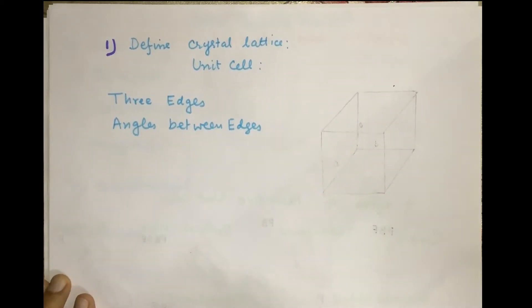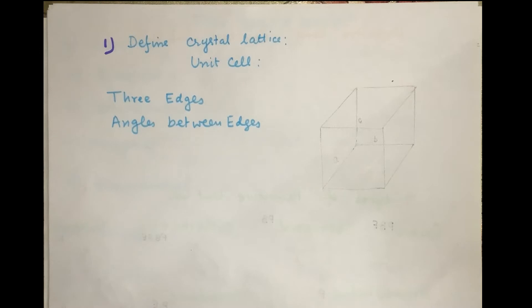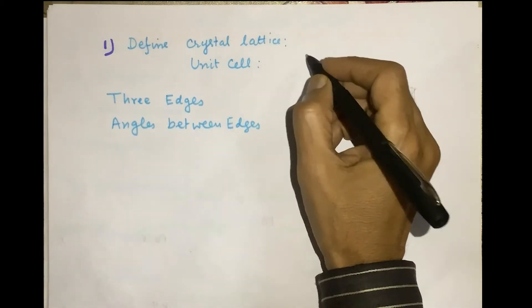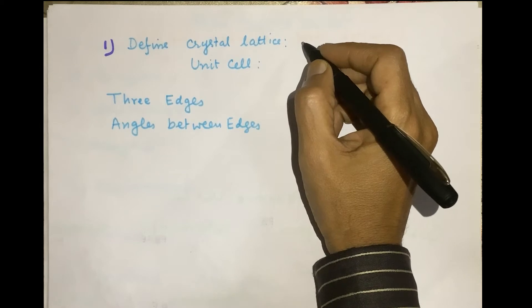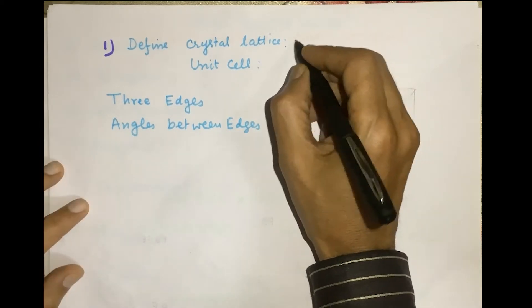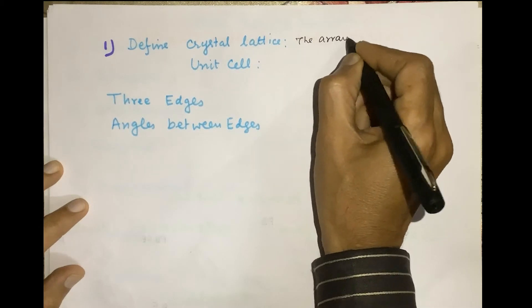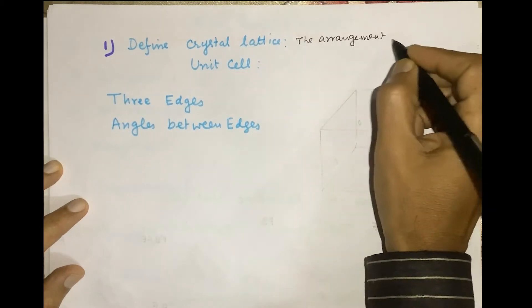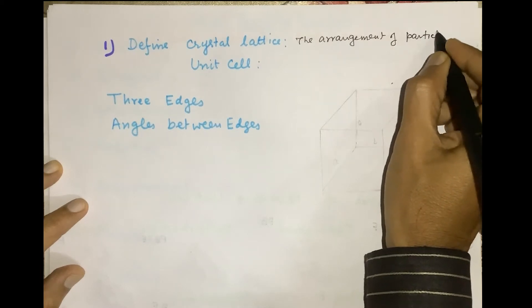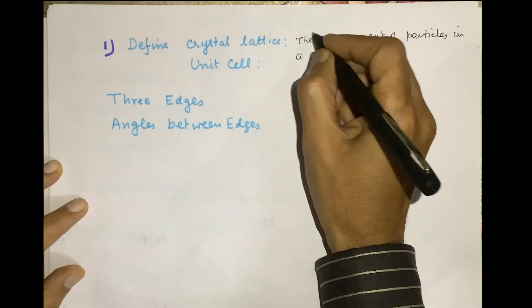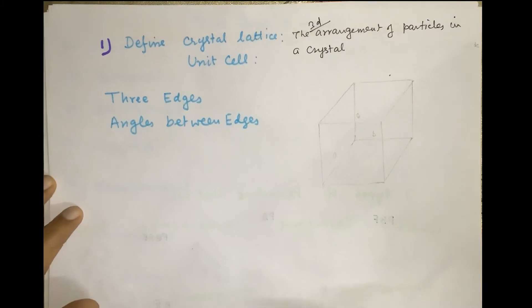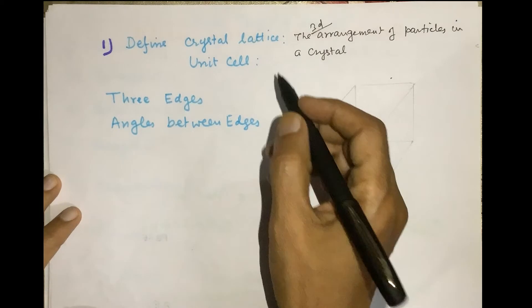In crystalline solids, there is a repetition of pattern of constituent particles. The three-dimensional arrangement of the constituent particles in a crystal is called the crystal lattice.